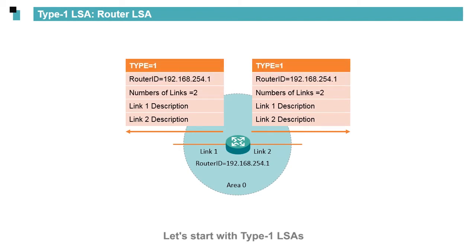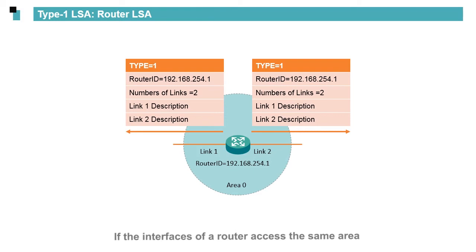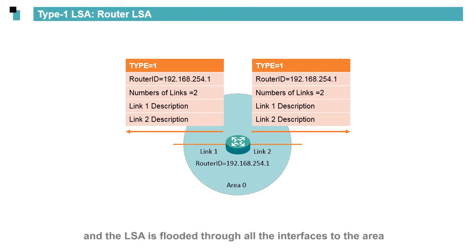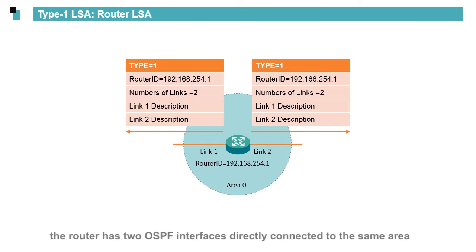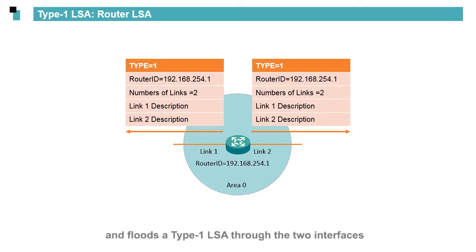Let's start with Type 1 LSAs. Type 1 LSAs are generated by each router that runs OSPF. If the interfaces of a router access the same area, the router generates only one Type 1 LSA, and the LSA is flooded through all the interfaces to the area. On the network shown in the figure, the router has two OSPF interfaces directly connected to the same area and floods a Type 1 LSA through the two interfaces.